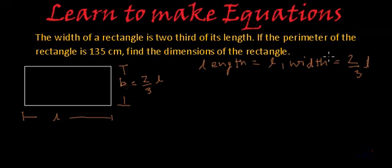And what they are saying in the second part? In the second part they are saying if the perimeter of the rectangle is 135 centimeters, find the dimensions of the rectangle. So as we know what is the formula of the perimeter of the rectangle? Perimeter of the rectangle is two times length plus breadth. This is the length, this is the breadth.